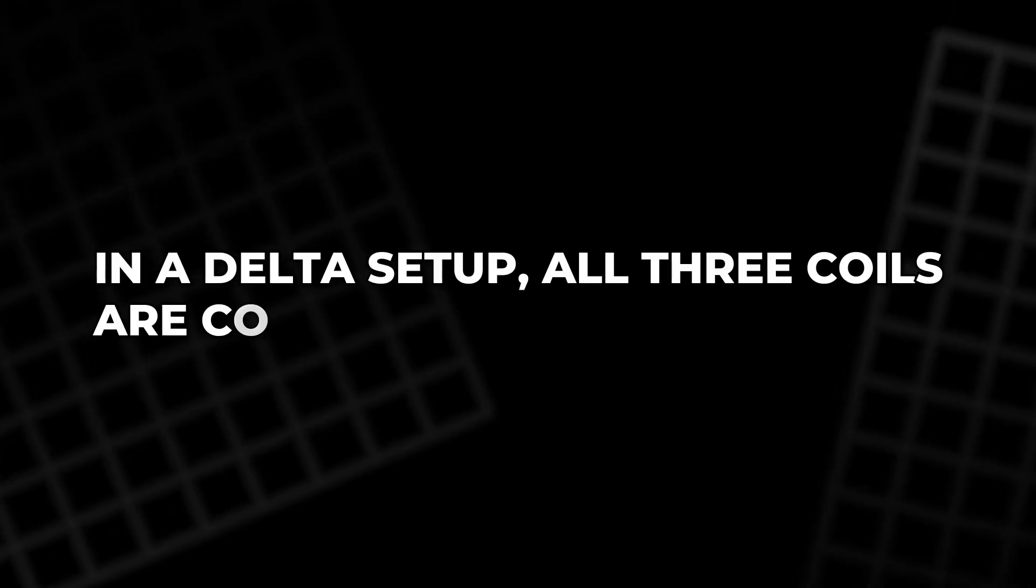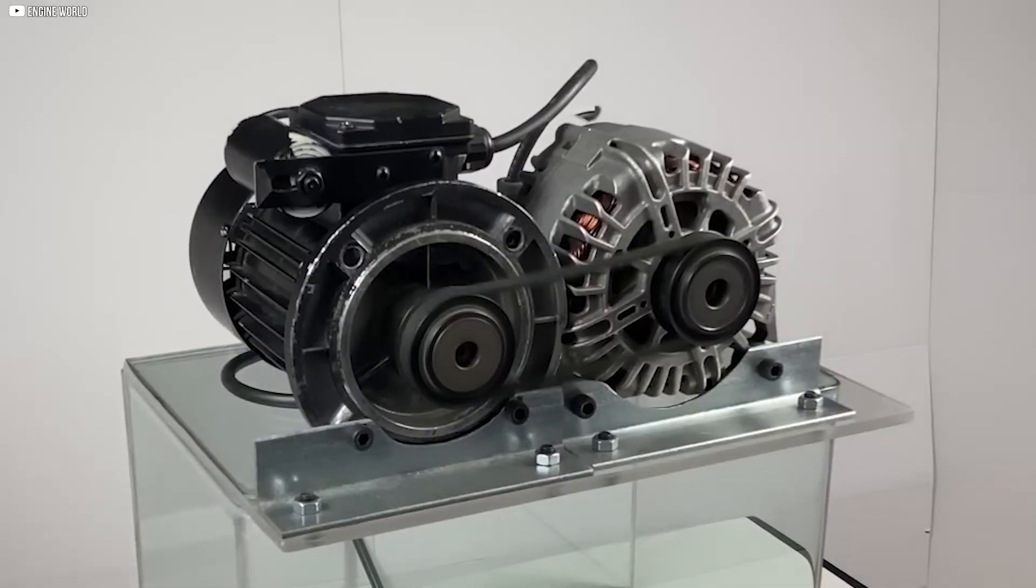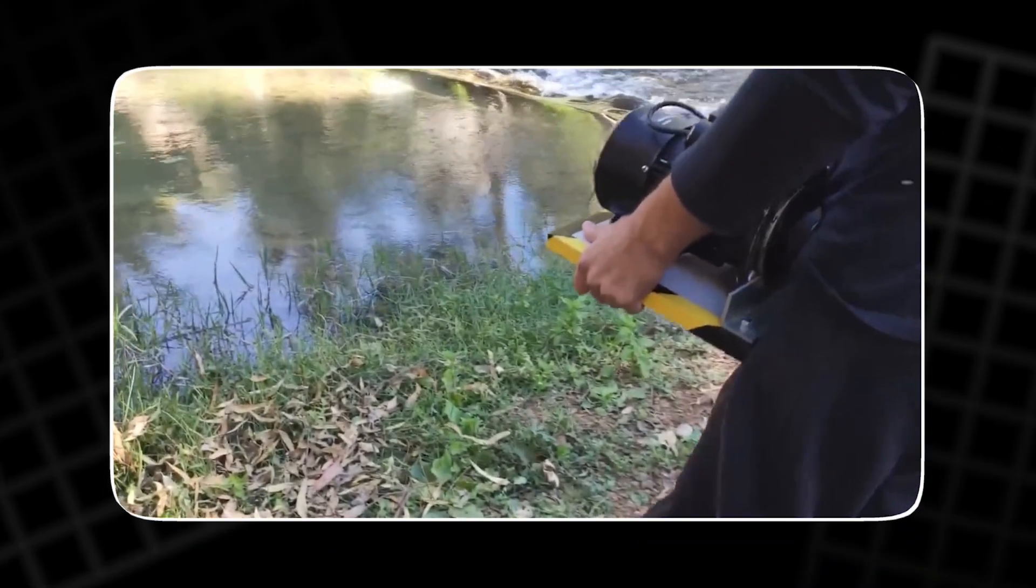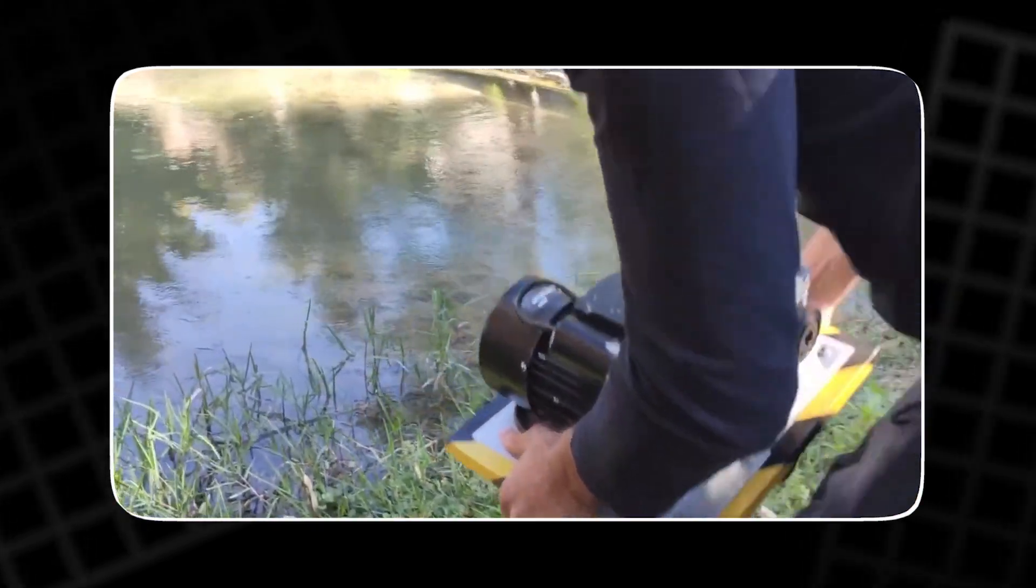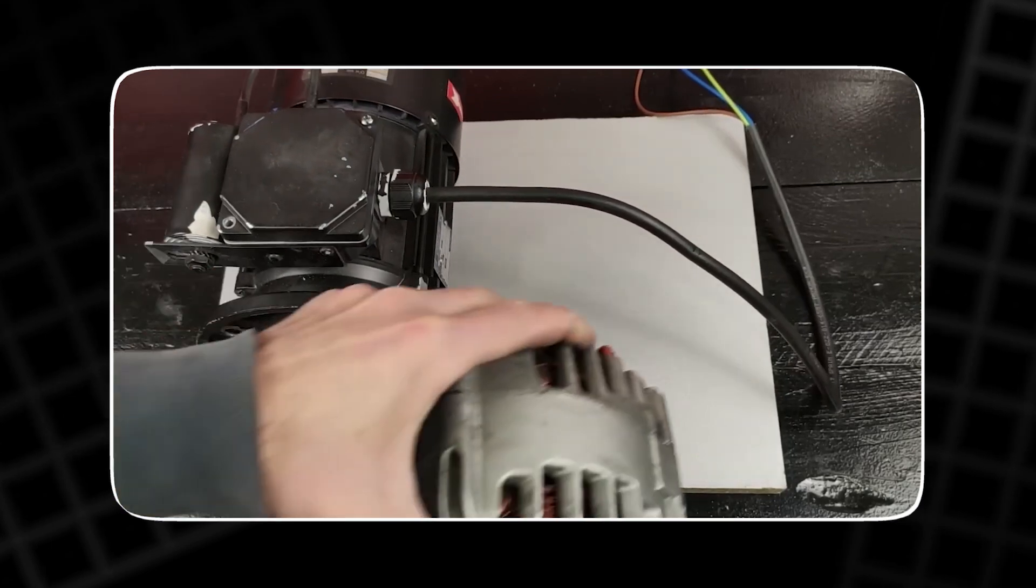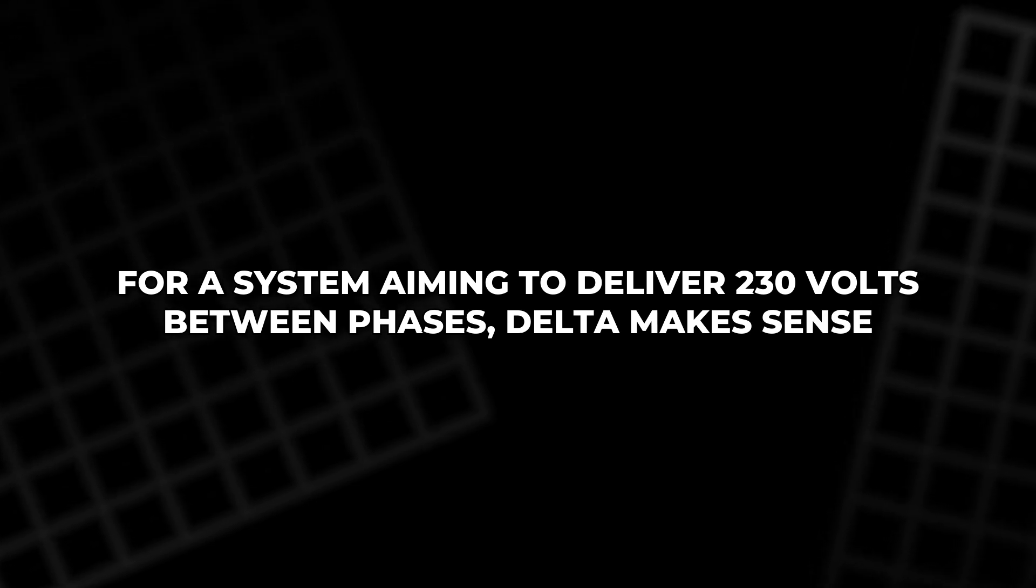In a delta setup, all three coils are connected in a closed loop. There's no neutral wire, only three phase wires. This design is known for its ability to handle high loads, maintain voltage stability, and operate without a central grounding point. For a system aiming to deliver 230 volts between phases, delta makes sense.